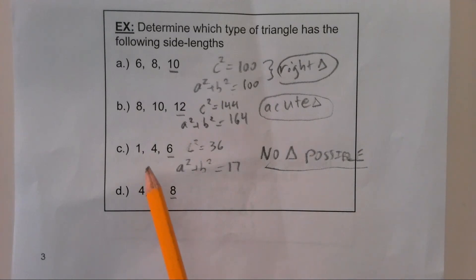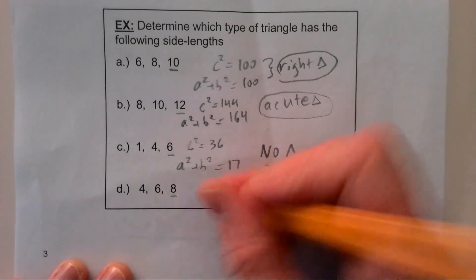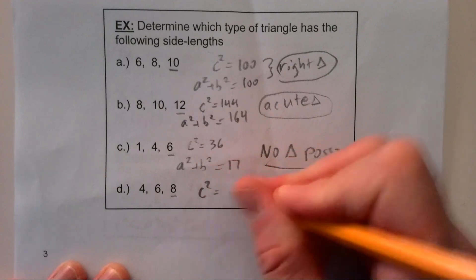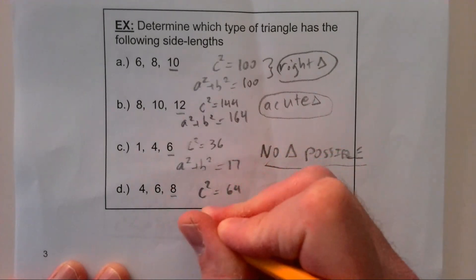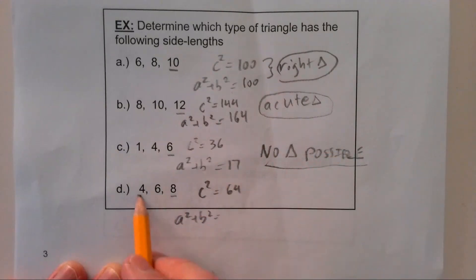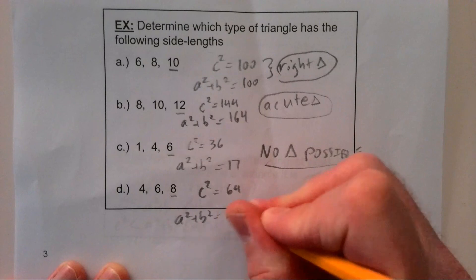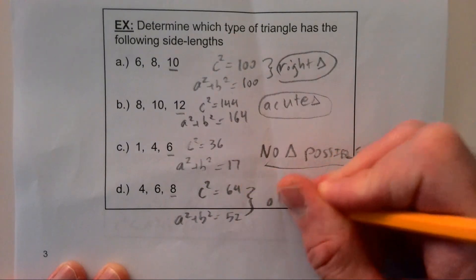So for this last one, I can, because 4 plus 6 is greater than 8. Now I'm going to check. C squared, that's 64. A squared plus b squared, 16 and 36 is 52. Okay, so that means that this is an obtuse triangle.